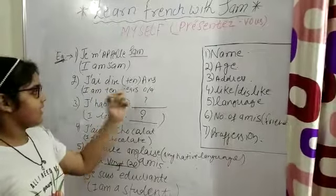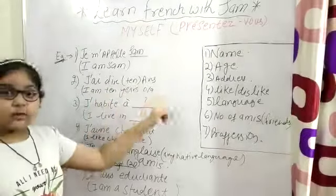Second, J'ai dix ans means ten ants. I am ten years old.